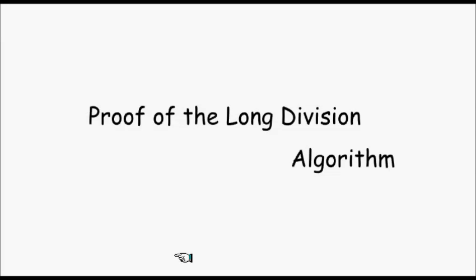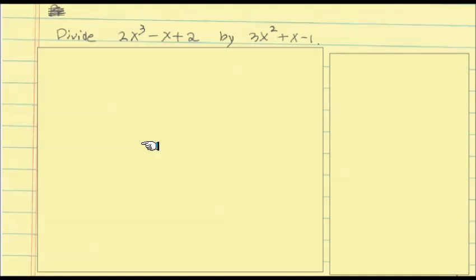In this video, I'd like to go over the sort of proof of the long division algorithm. This is not going to be a general proof, but we're going to be using an example to show how the general proof goes. The example we're going to use is the dividend 2x³ minus x plus 2 and divisor 3x² plus x minus 1.